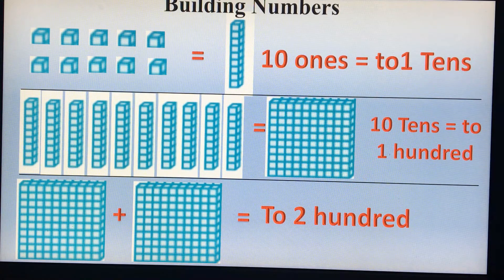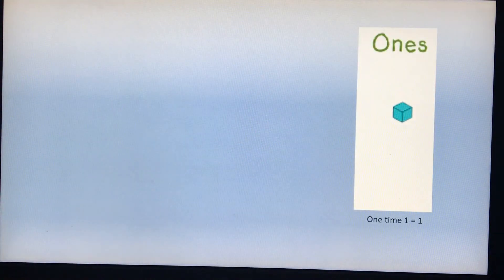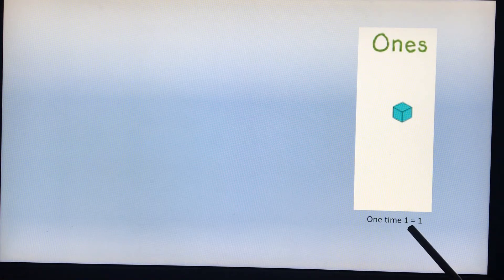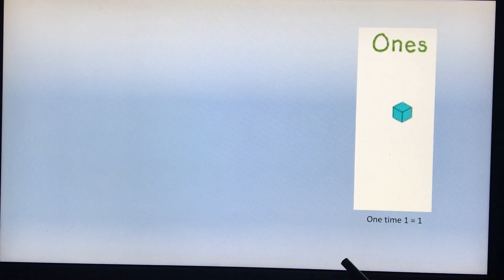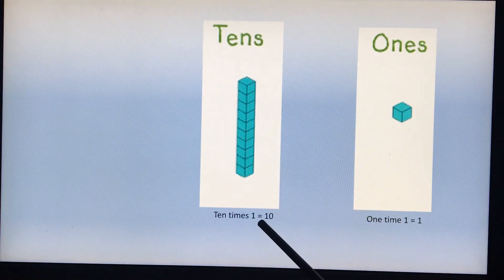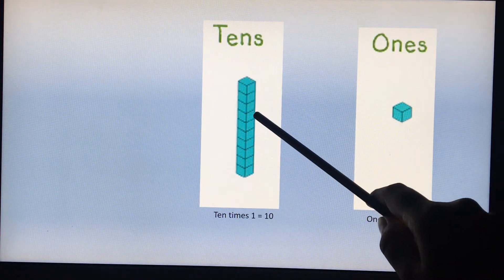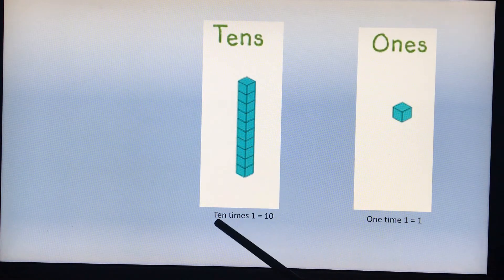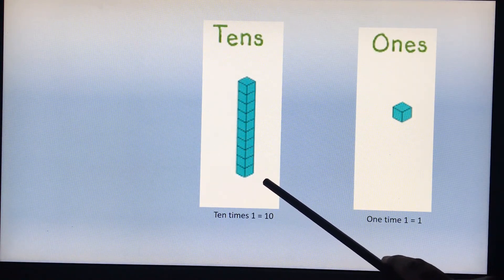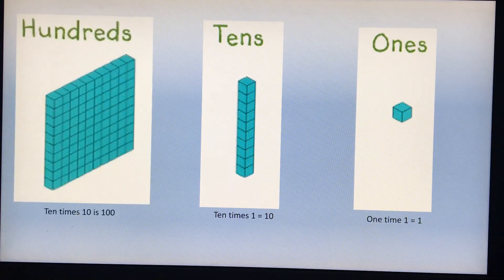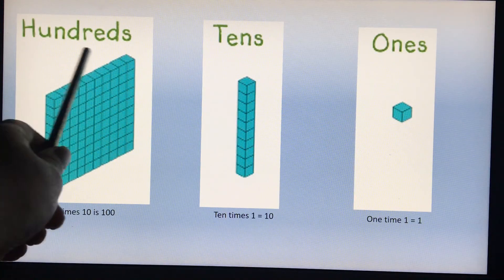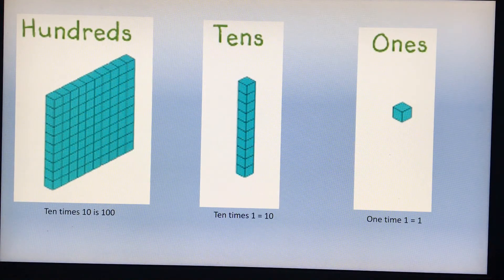Now let us see a few more examples and build the numbers. This cube represents one — one times one is equal to one. Ten times one is equal to ten. So this ten block represents ten in our further examples. And ten times ten is one hundred, so this flat block represents a hundred block for us. Now let us move and check a few examples to find out how to build three-digit numbers.